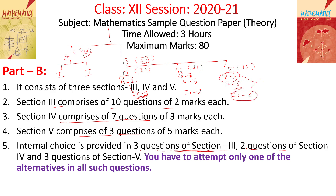Each and every question has internal choices, which is very helpful for you. In one-mark questions there are four or five internal choices. Overall, approximately 30 to 40 percent internal choices are given in the paper for your feasibility.